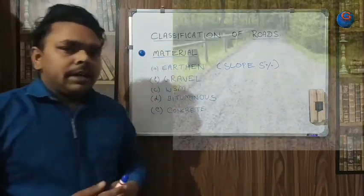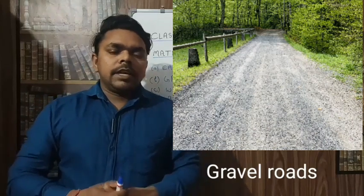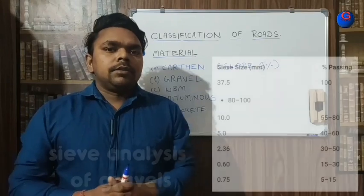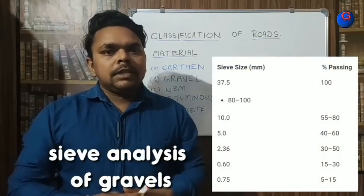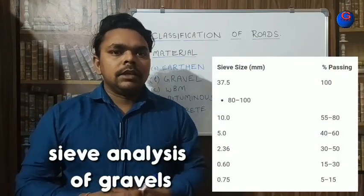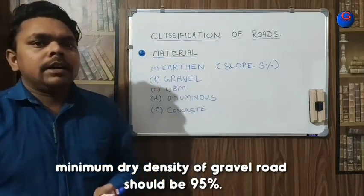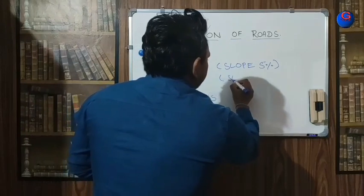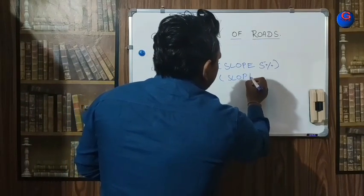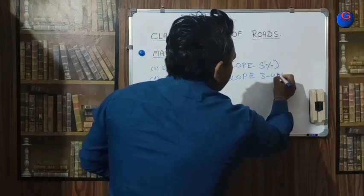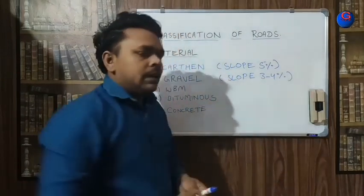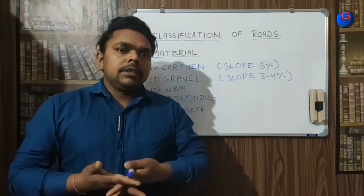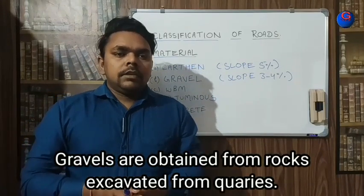Number two is gravel roads. Gravel roads are much better than earthen roads. They are also low cost roads, but their durability is much higher compared to earthen roads. In gravel roads we provide a cross slope of three to four percent. Gravels are basically material brought to the site from streams.